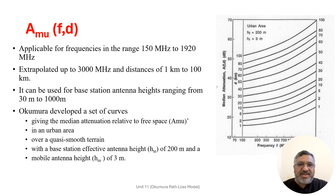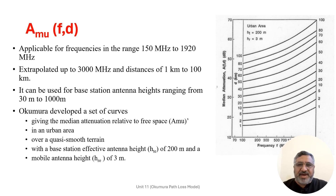These curves were developed from extensive measurements using vertical omnidirectional antennas at both the base and mobile stations. They are plotted as a function of frequency in the range of 100 MHz to 1920 MHz and as a function of distance from the base station in the range of 1 km to 100 km. To determine path loss using the Okumura model, the free space path loss between the points of interest is first determined, and then the value of AMU is added along with a correction factor to account for the type of terrain.